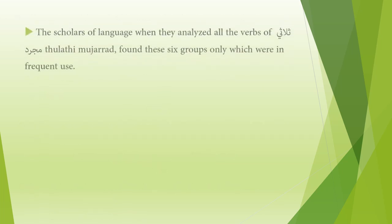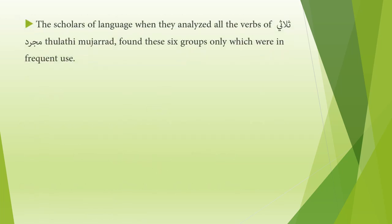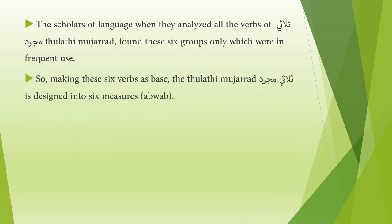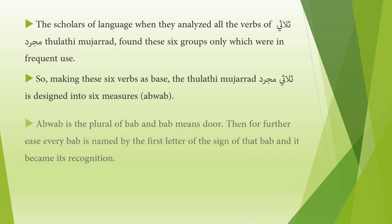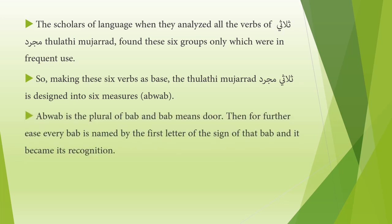The scholars of language, when they analyzed all the verbs of thulathi mujarrad, found these six groups only, which were in frequent use. So, making these six verbs as a base, the thulathi mujarrad is designed into six measures — abwaab. Abwaab is the plural of bab, and bab means door. For further ease, every bab is named by the first letter of the sign of that bab, and it became its recognition.